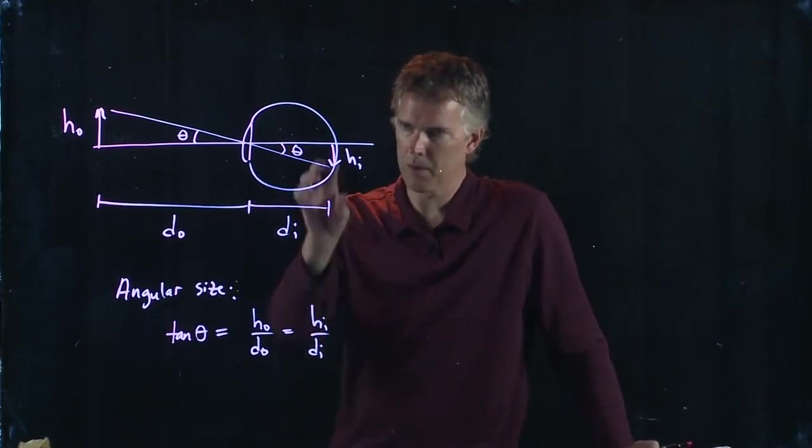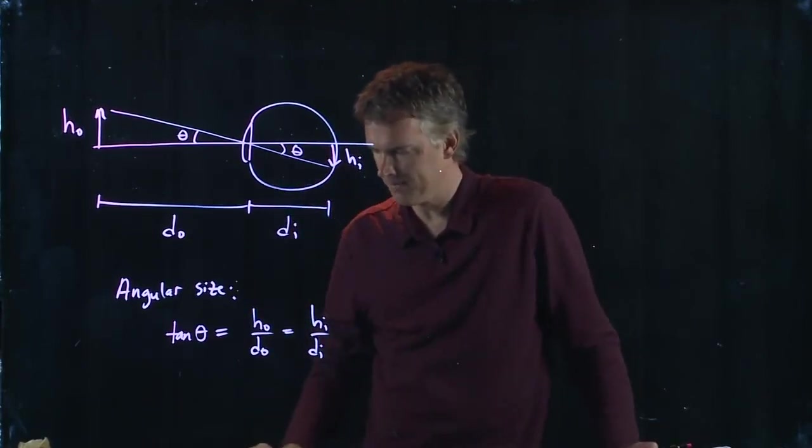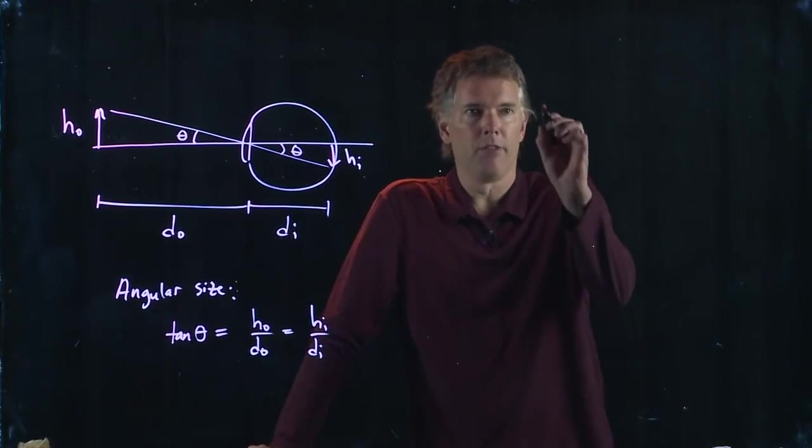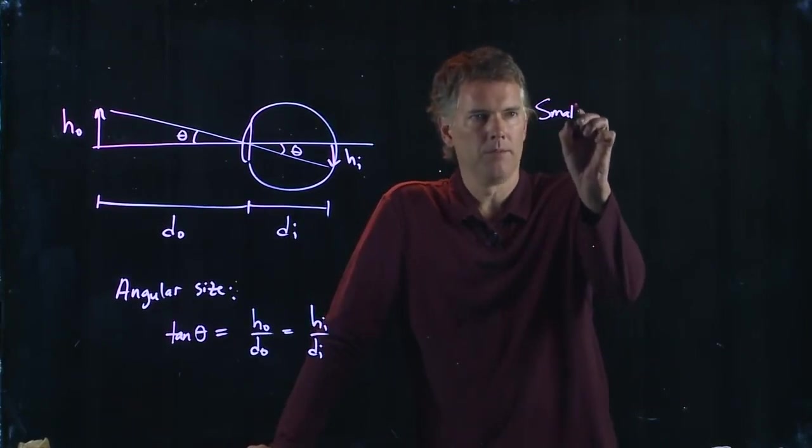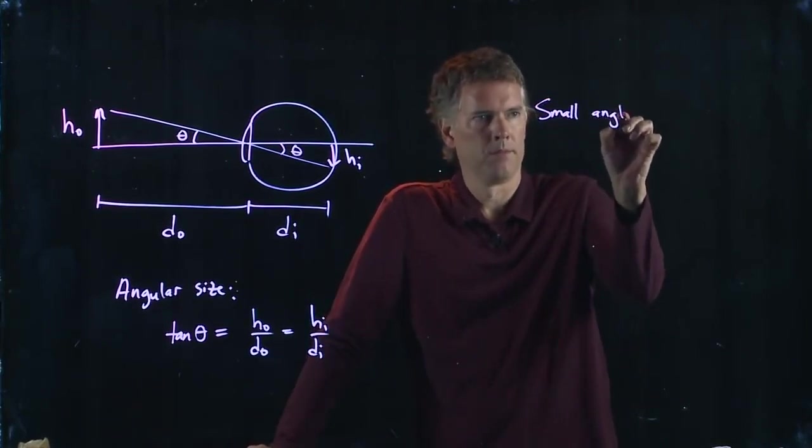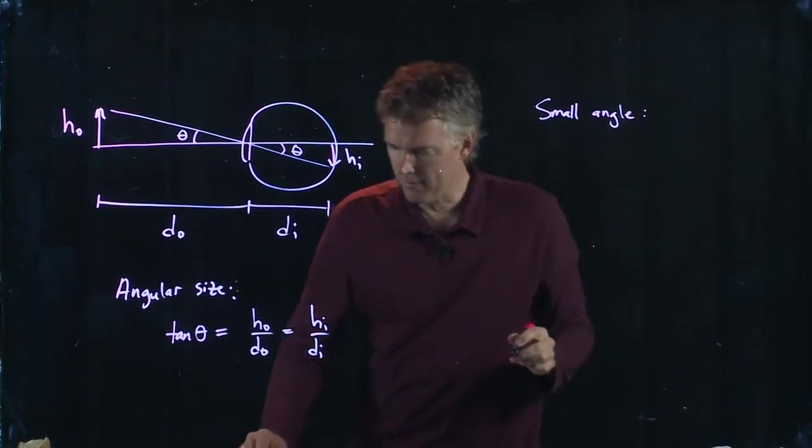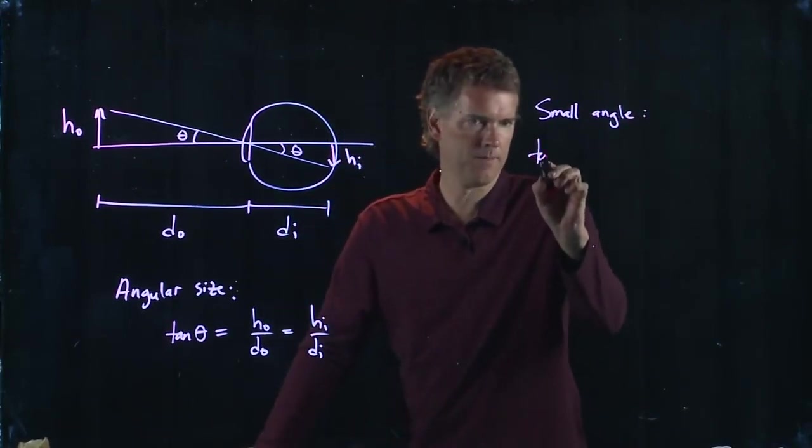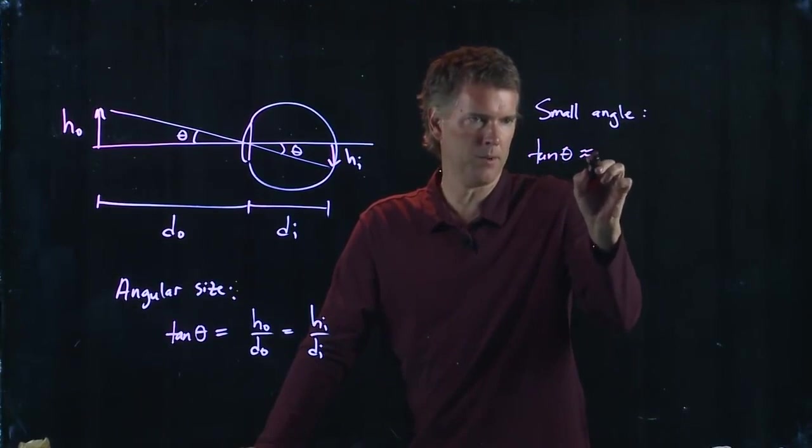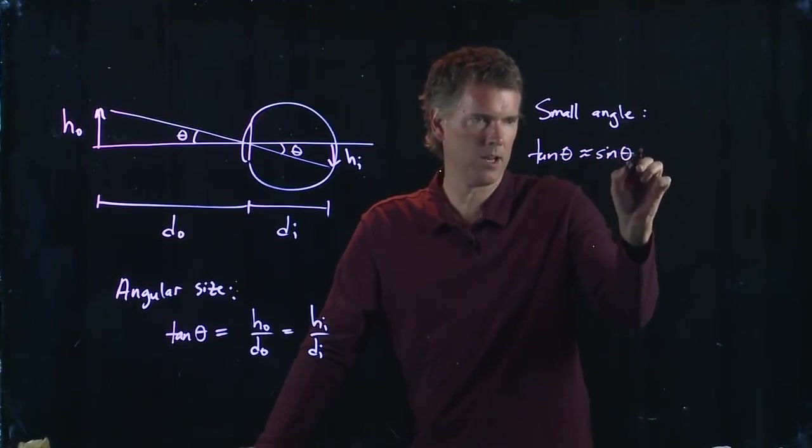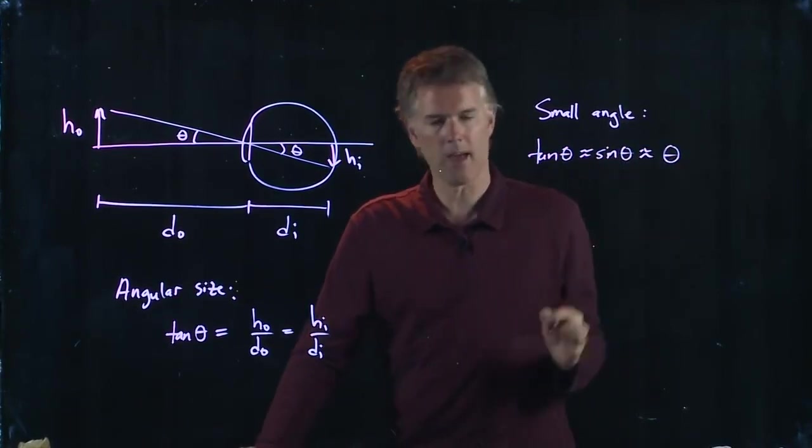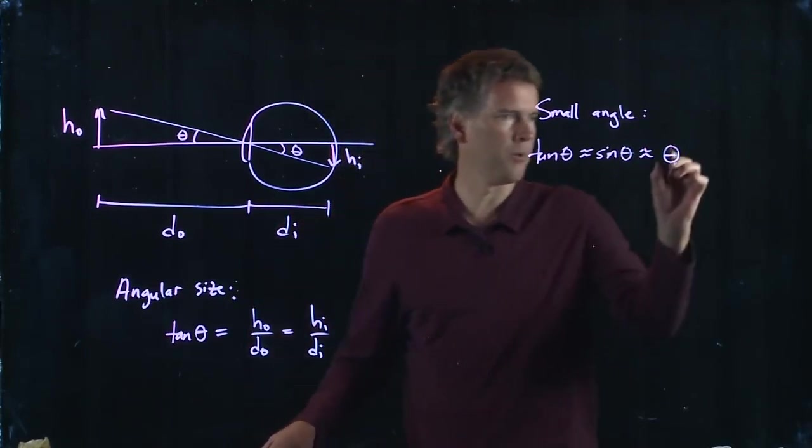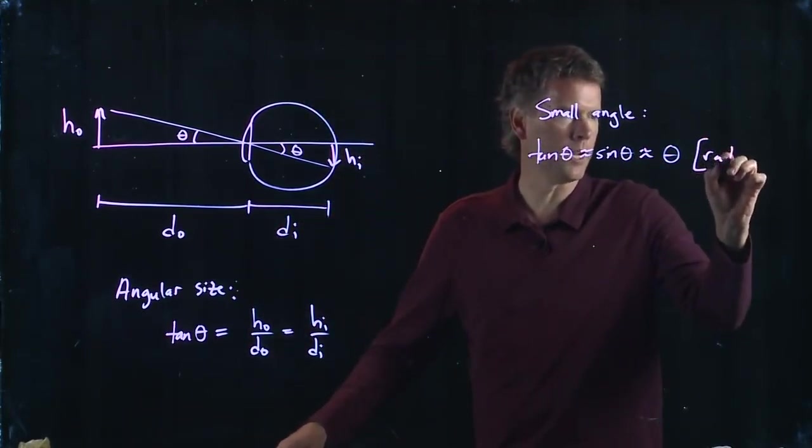d_o, which is the same as h_i over d_i. And now for the small angle approximation, we have the following: tangent theta is basically the same as sine theta, and we're just going to call that theta. And remember, theta is in units of radians.